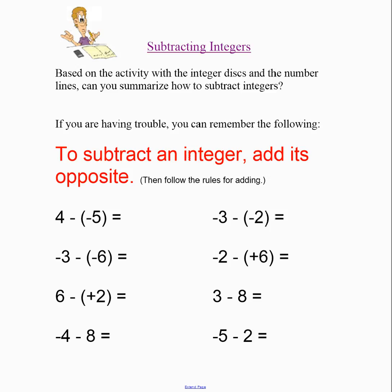And to change subtracting questions into adding questions, you add the opposite. So for example, if I were to change this question, I'm going to change this subtraction into an adding. But I can't just change it into an adding because 4 minus negative 5 is not the same as 4 plus negative 5. But I can add the opposite of negative 5, and the opposite of negative 5 is 5. So now what I've done is I've just changed that question into 4 plus 5, and I get 9.